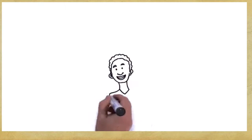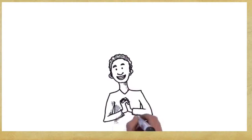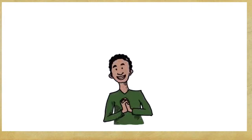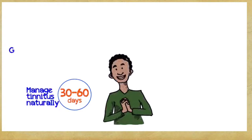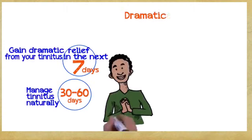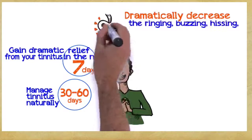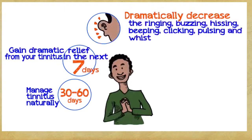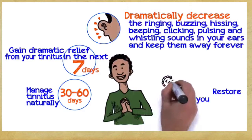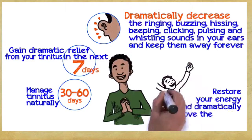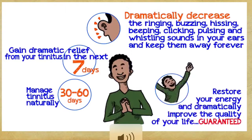So what can you gain if you embrace these three easy principles? Well, you can manage tinnitus naturally within 30 to 60 days. Gain dramatic relief from your tinnitus within the next seven days. Dramatically decrease the ringing, buzzing, hissing, beeping, clicking, pulsing, and whistling sounds in your ears and keep them away forever. Restore your energy and dramatically improve the quality of your life, guaranteed.